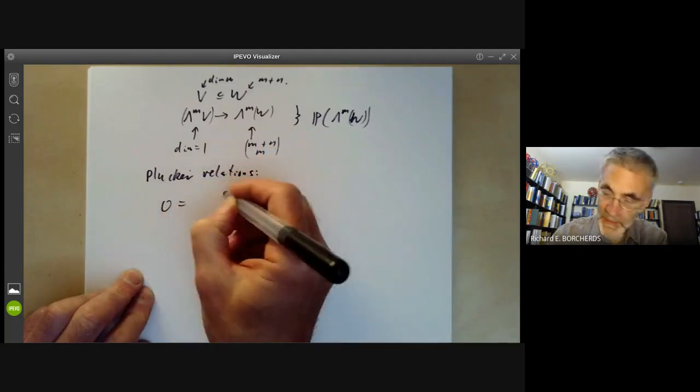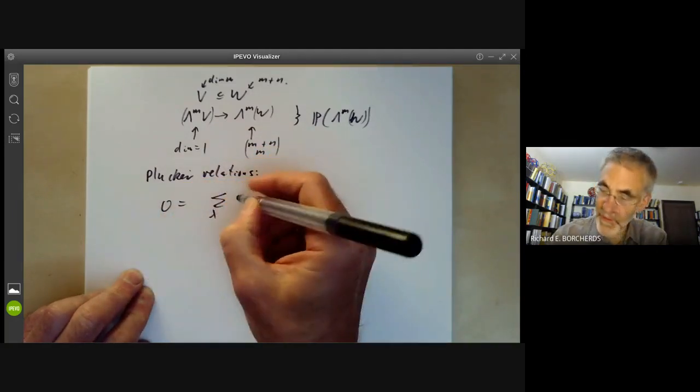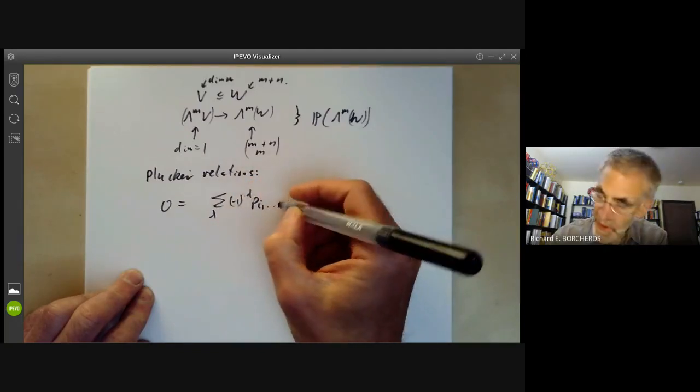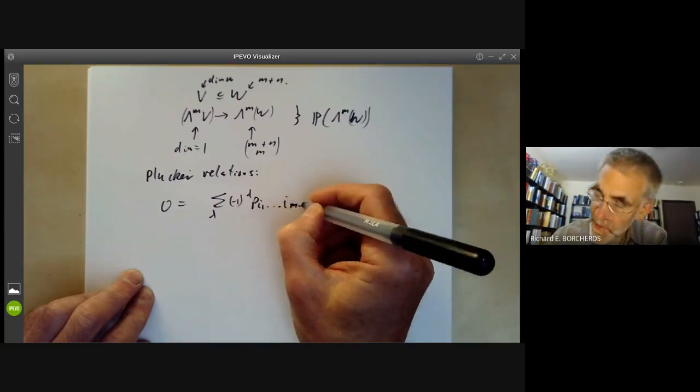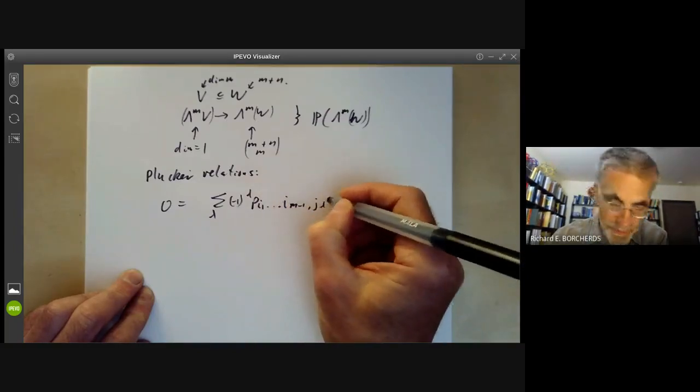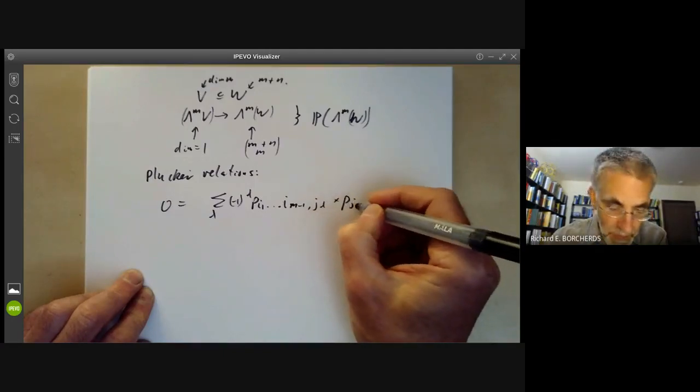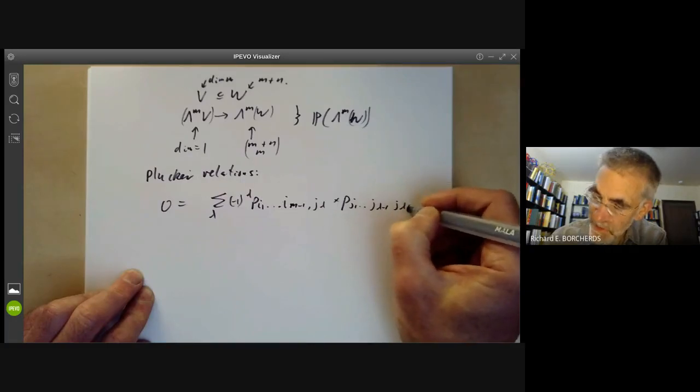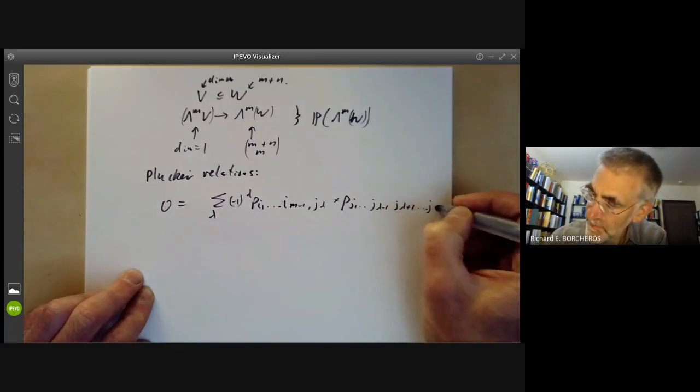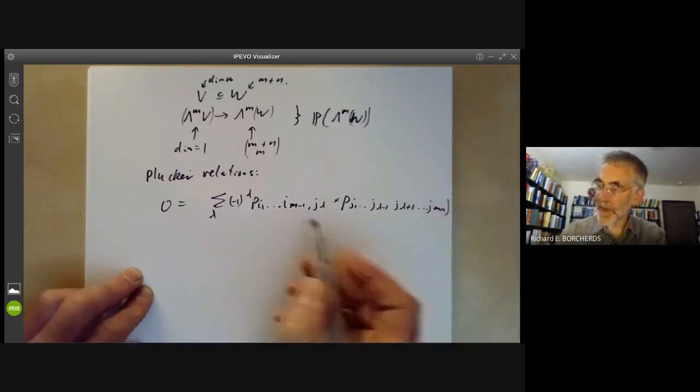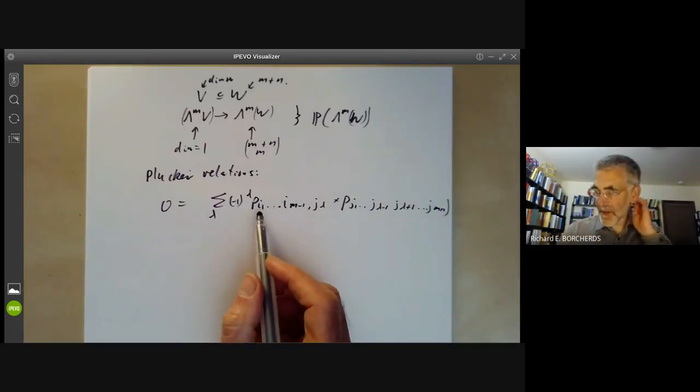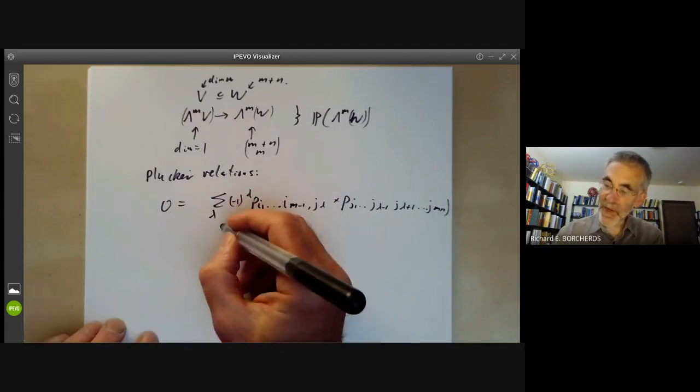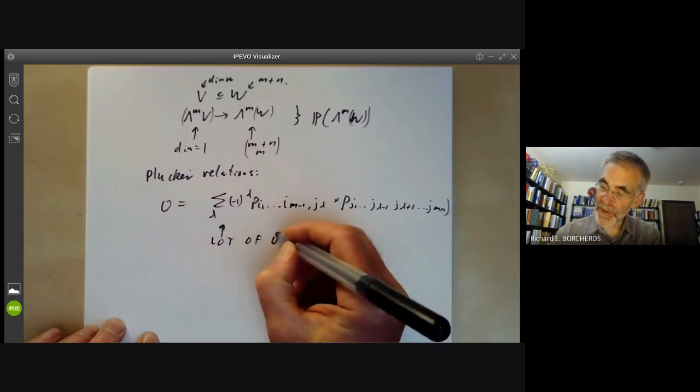We get that 0 is the sum over lambda of minus one to the lambda of P_{i1 up to i_{m-1}, j_lambda} times P_{j1 to j_{lambda-1}, j_{lambda+1}, j_{m+1}}. So where you pick m columns here and m columns here. So this is again, a lot of quadric relations.